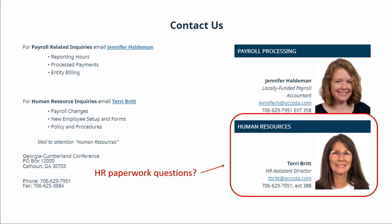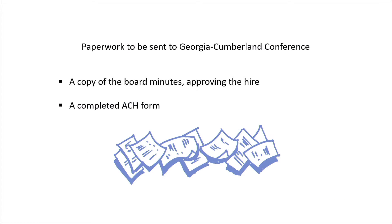As soon as a board has voted, you will need to send the following to Georgia Cumberland Conference: a copy of the board minutes approving the hire, and a completed ACH form so that the payroll amount can be deducted from the church checking account every two weeks. Even if you have filled one out for the remittance process, do it again for payroll.